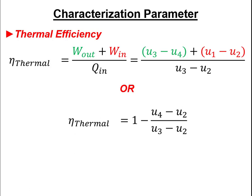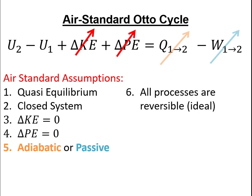If we do a first law analysis on each process, we find that work out is u3 minus u4 and work in during the compression stroke is u1 minus u2, which is a negative number. Heat in occurs between states 2 and 3 and is given by u3 minus u2. We can rearrange to find that thermal efficiency equals 1 minus (u4 minus u1) divided by (u3 minus u2).